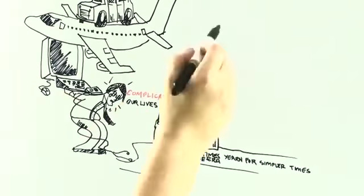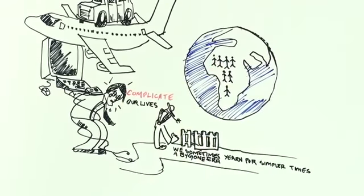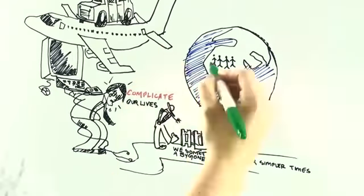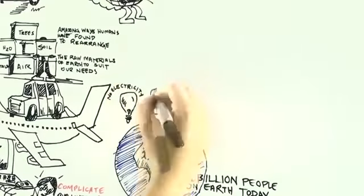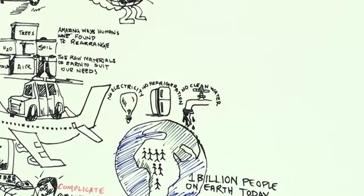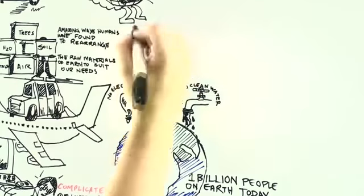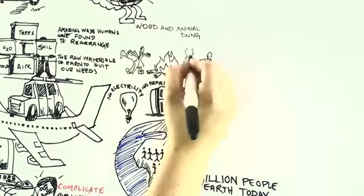Yet that way of life has not been relegated to the dustbin of history. It is still lived by more than one billion people on the Earth today who have no electricity, no refrigeration, no clean water, and who must gather wood and animal dung to use for heating and cooking.